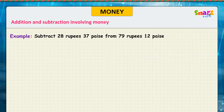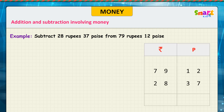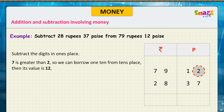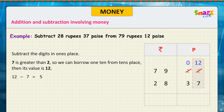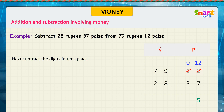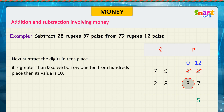Example: subtract 28 rupees 37 paise from 79 rupees 12 paise. Look at the problem. Subtract the digits in the ones place. 7 is greater than 2, so we borrow 1 ten from the tens place. Then its value becomes 12. 12 minus 7 is equal to 5. Next, subtract the digits in the tens place.